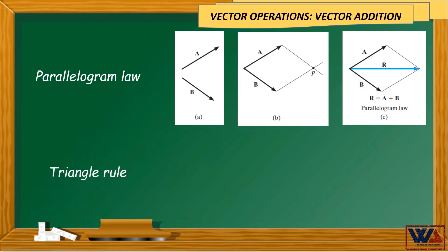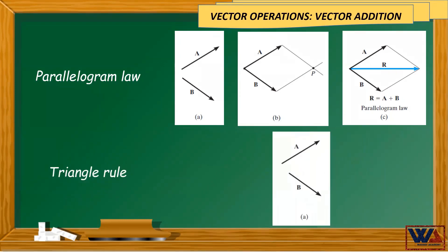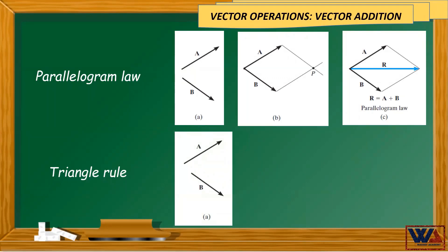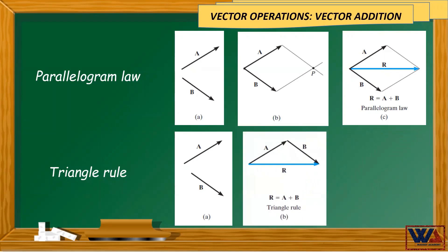In the triangle method, to add the two vectors A and B, we can follow the following steps. First, connect the starting point of any vector to the ending point of the other vector. For example, connect the starting point of vector B to the ending point of vector A as shown in figure B. Then draw a line from the starting point of A to the ending point of B. This line, which is R here, represents the result of addition of vectors A and B.